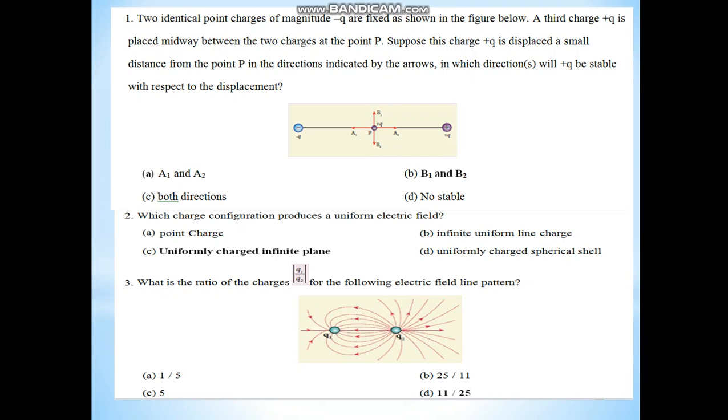Second question: Which charge configuration produces a uniform electric field? A uniformly charged infinite plane is the answer C. Third question is about electric field lines. The answer for the first question is B1 and B2, point P1 and P2 are stable with respect to displacement from the infinite plate.